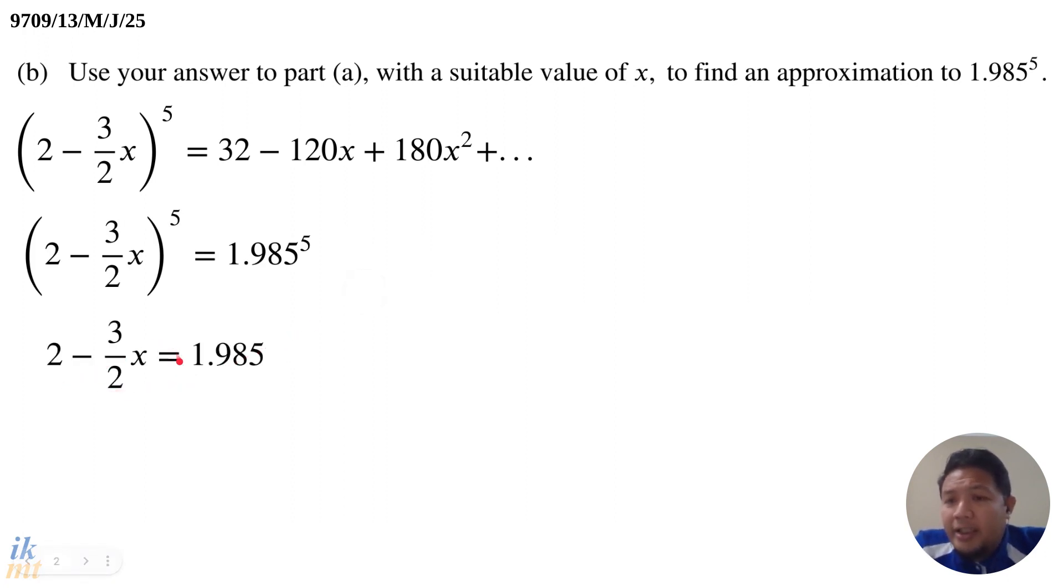So from there, we have to, we can then find a suitable value of X, which is what they say here, with a suitable value of X, we have to find a suitable value of X. And this is a linear equation with only one unknown, which means that it's very simple for you to go and find that X. So you go ahead and go and find the value of X using algebraic manipulation. And in the end, you get X equals 0.01.